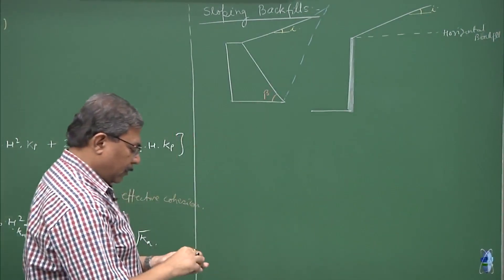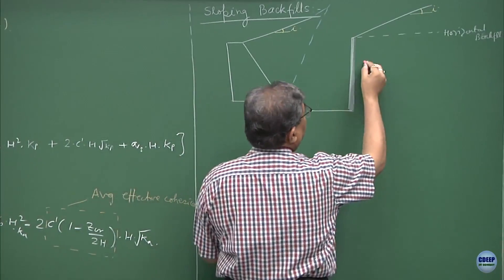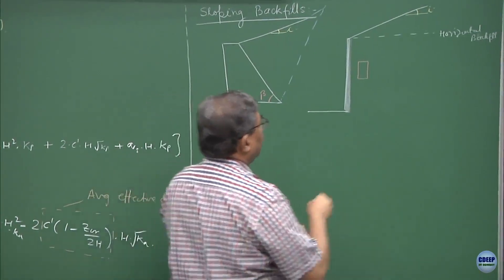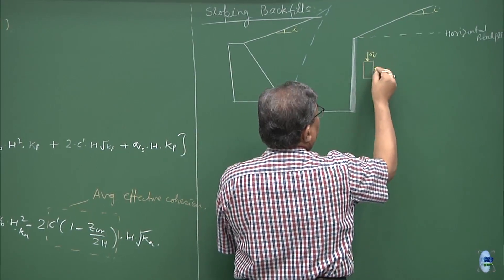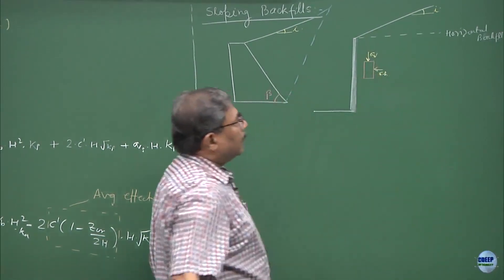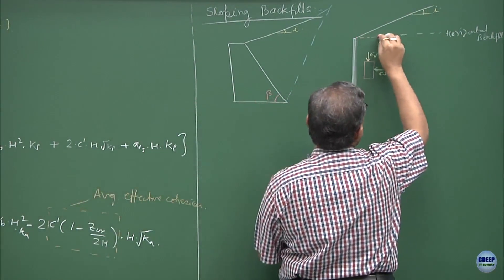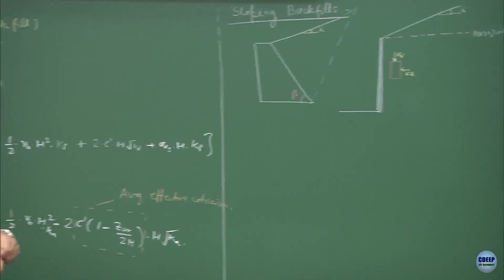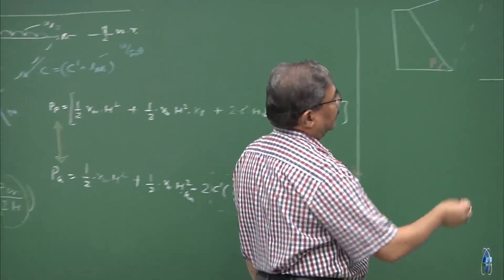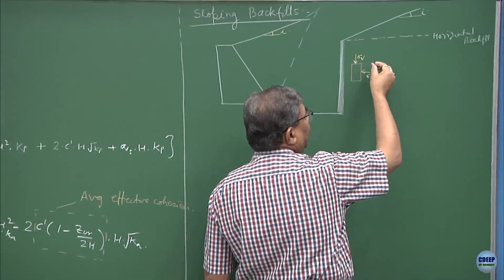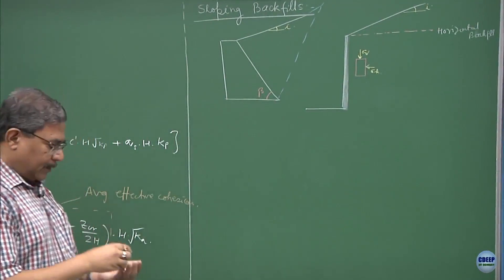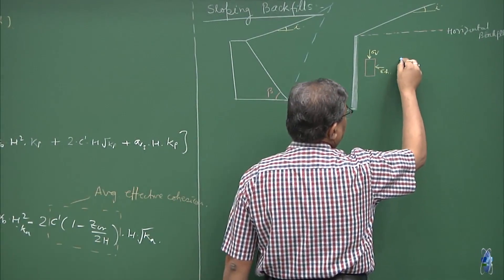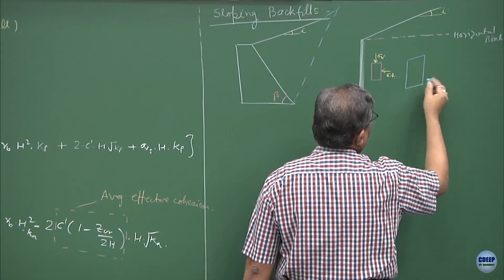If I would have taken an element of the soil mass very close to the wall, this is how it would have looked like, the actual element. We would have been having sigma_v, sigma_h due to the condition when the backfill is horizontal. But now what has happened? The backfill has got inclined with an angle of i, so geometrical compatibility is lost and the new geometrical compatible system would look like this element.